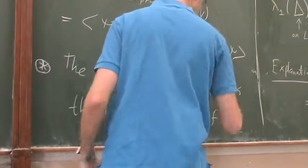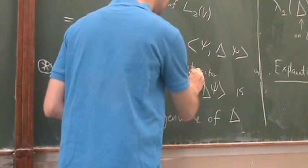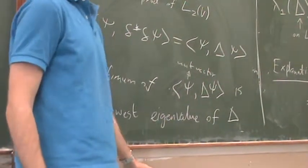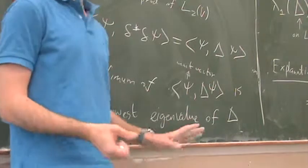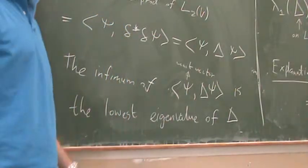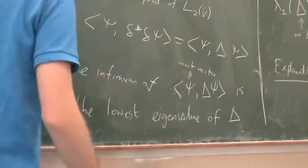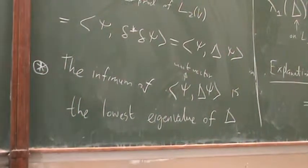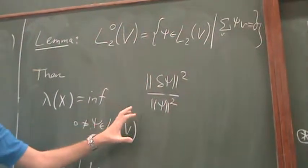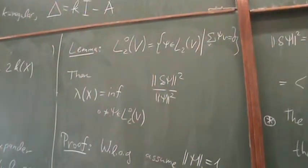This argument - that the infimum of ⟨ψ, Δψ⟩/‖ψ‖² over a restricted unit-vector subspace equals the lowest eigenvalue of Δ on that subspace - is standard functional analysis / linear algebra, and we will use it several times in this course.